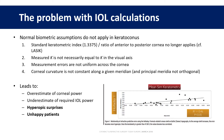This graph in the bottom right shows that the steeper the Ks, the more inaccurate our calculations in keratoconus become. This is with the Holliday 1, but similar results are to be expected with other formulae.